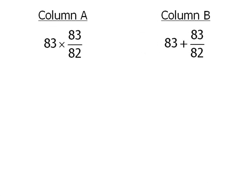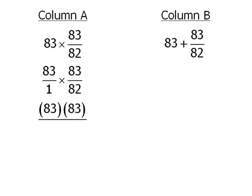Okay, let's begin with Column A. For my first step I'm going to rewrite 83 as 83 over 1. At this point we can multiply these two fractions by first multiplying the two numerators and now we'll multiply the two denominators.